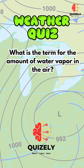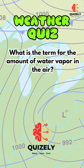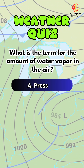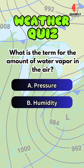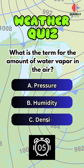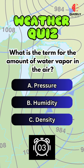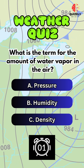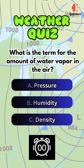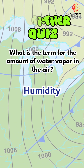What is the term for the amount of water vapor in the air? A. Pressure. B. Humidity. C. Density. The right answer is humidity.